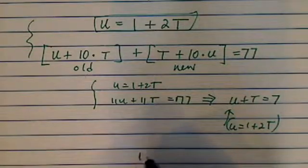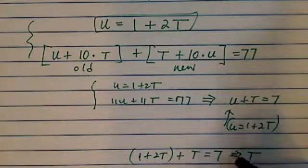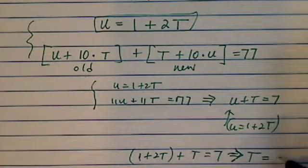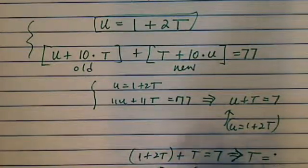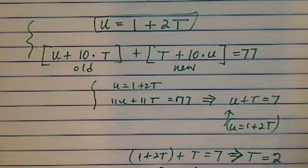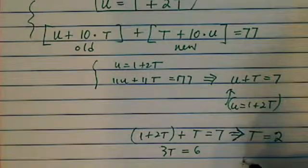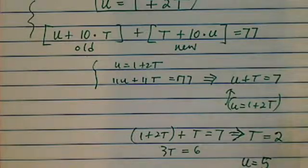Substituting gives 1 plus 2T plus T equals 7, so 3T equals 6, meaning T equals 2. Since U equals 1 plus 2T, that gives U equals 5. So the old number is actually 25.